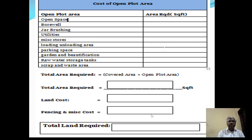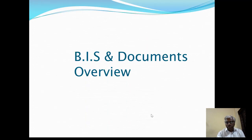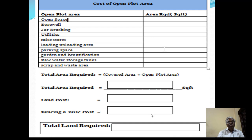The open plot area also needs to be calculated using the same template. Total area required, land cost, fencing — all are part of the calculation. A useful trick: if you only use part of a larger land parcel, count only the portion used. If you hire a shed, land cost is excluded from project cost, saving significantly. Totaling all these gives you the complete project cost.